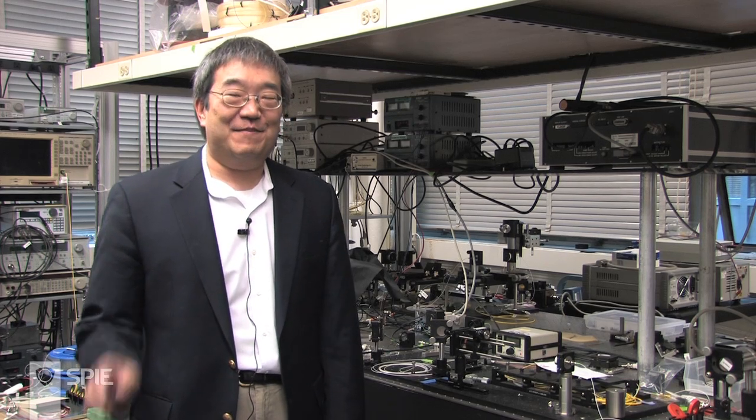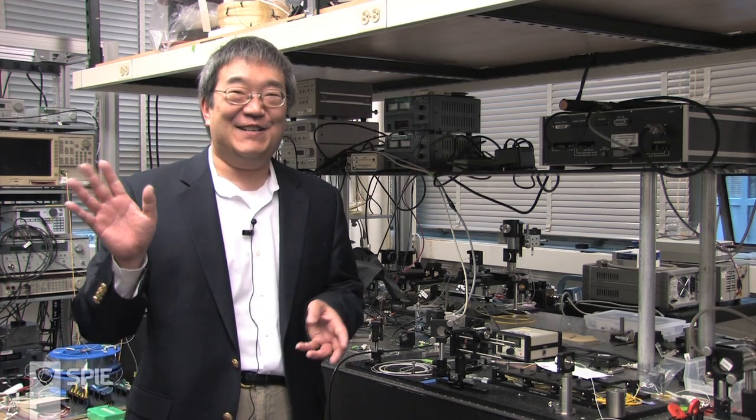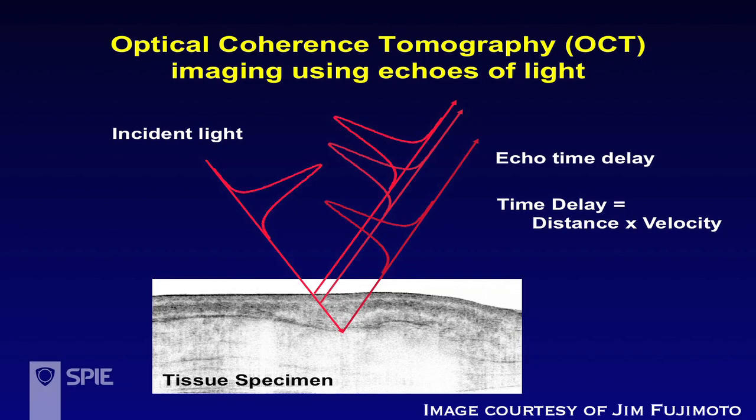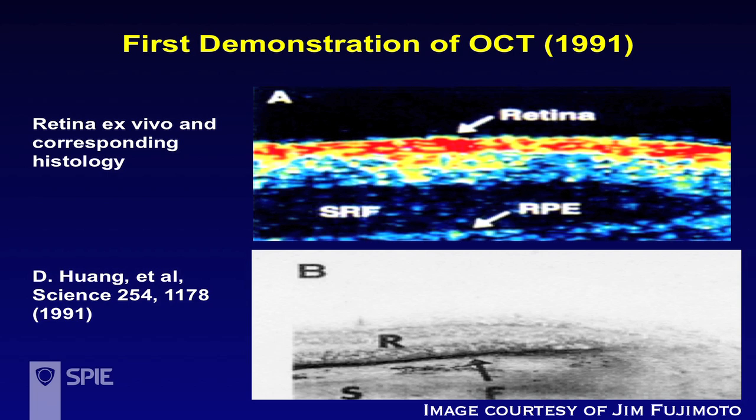OCT, or optical coherence tomography, was actually developed as a result of our work in femtosecond optics. We were interested in femtosecond optical ranging — the idea to use light pulses and measure echo time delays of light to look at structures. OCT was invented by David Huang, an MD-PhD student in our group, who had the idea to generate cross-sectional images by using low-coherence interferometry methods.